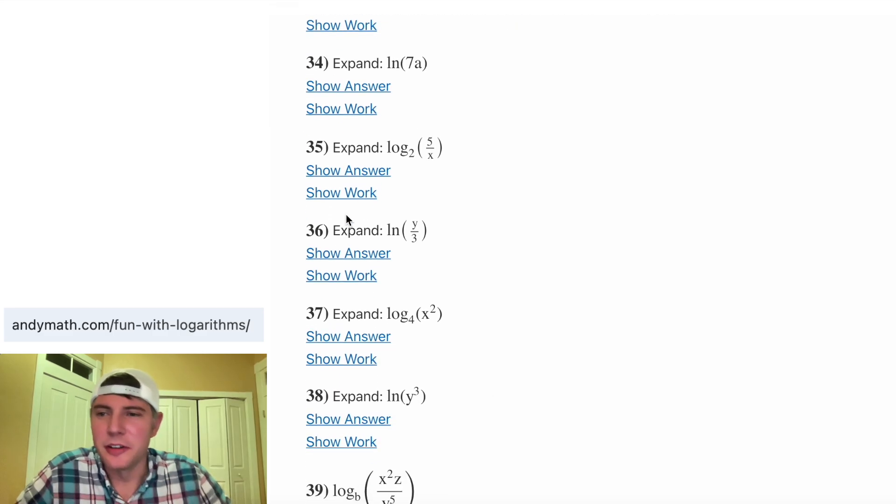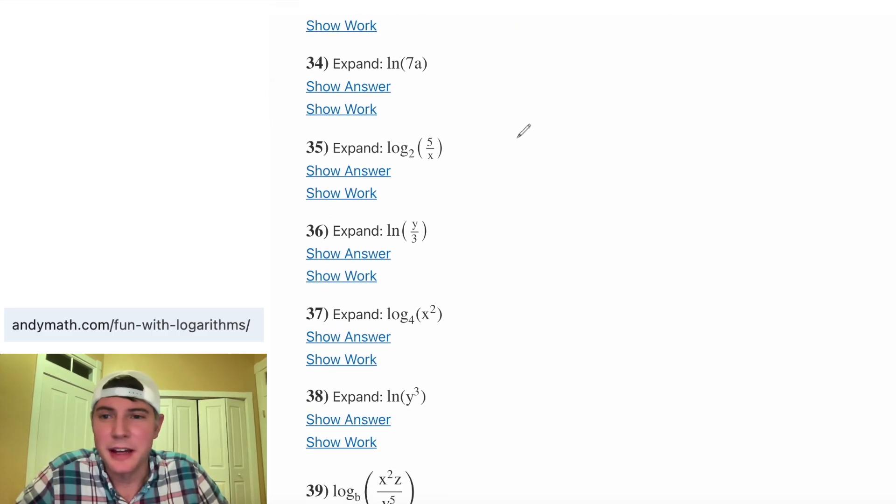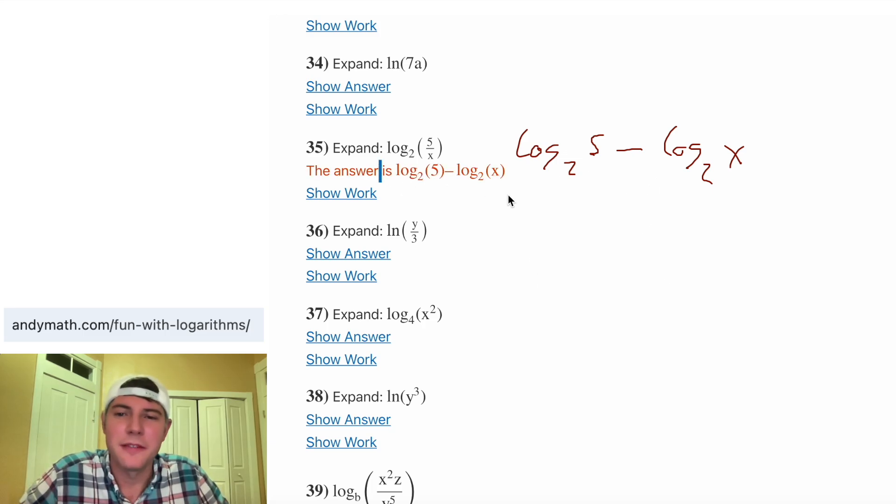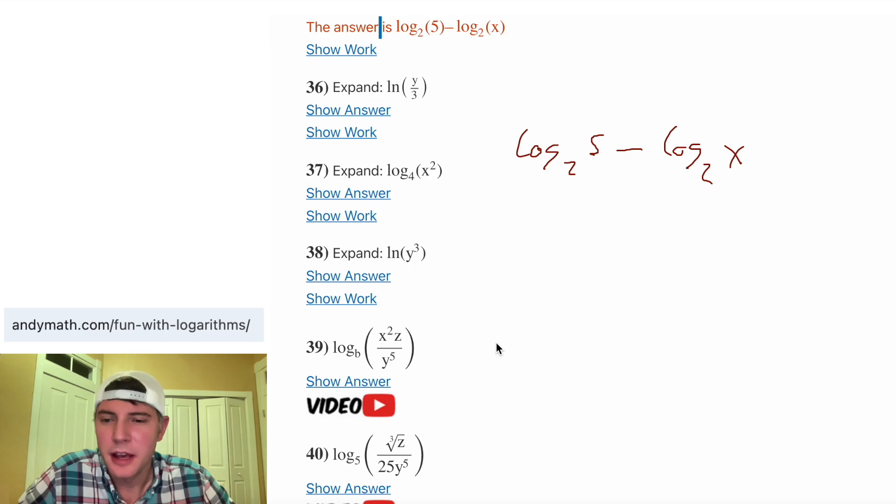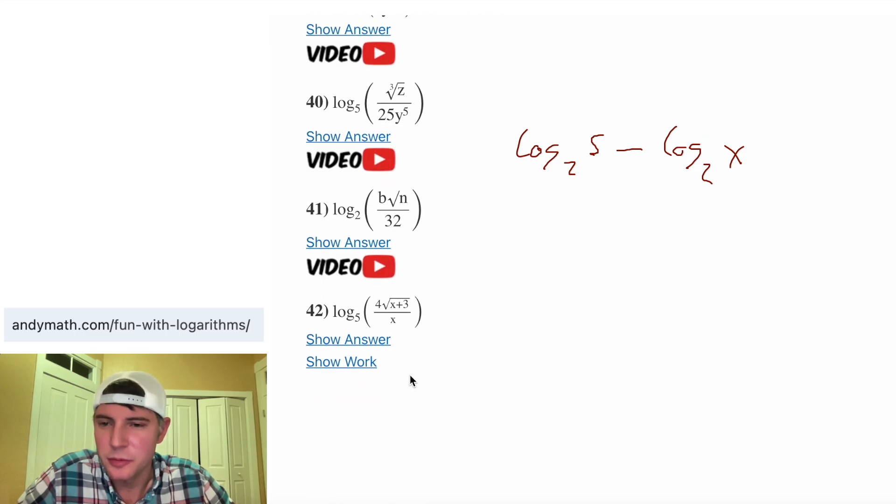So we know this is going to be two different logarithms. And one will be a 5, one will be an x. And then since it's divided, they'll be subtracted. So this is log base 2 of 5 minus log base 2 of x. And then there's additional practice for those as well.